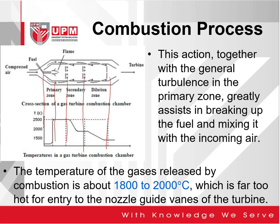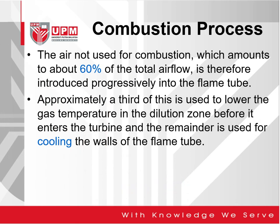The temperature of the gases released by combustion is about 1800 to 2000 degrees Celsius, which is far too hot for entry to the nozzle guide vane of the turbine. That is why dilution air is needed to cool down the temperature before it reaches the turbine section. The air not used for combustion — more than 60% of the total air flow — is introduced progressively into the flame tube. Approximately one third of this is used to lower the gas temperature in the dilution zone, and the remainder is used for cooling the walls of the flame tube.